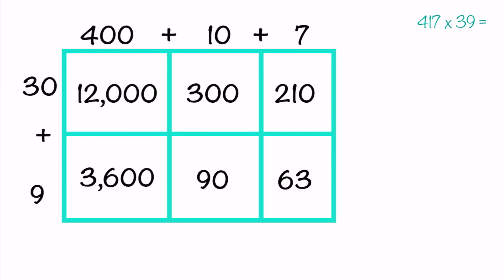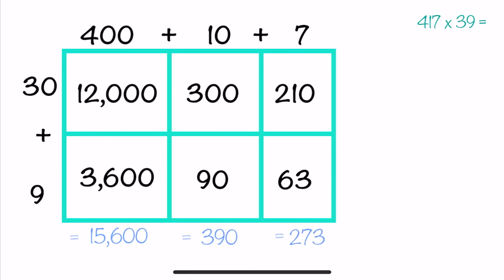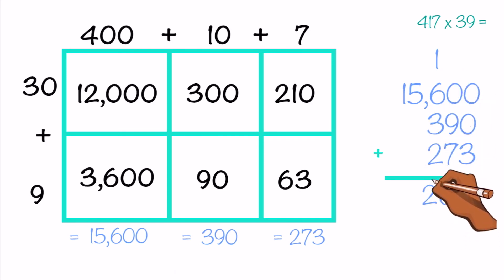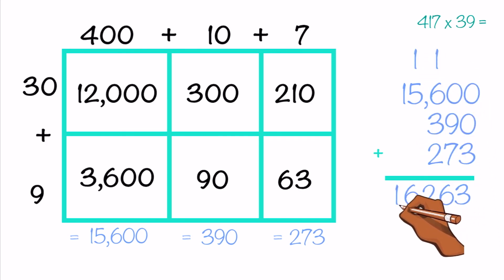This time we have 6 partial products instead of 4, so let's use some mental math to chunk these together. 12,000 plus 3,600 gives us 15,600. 300 plus 90 is 390. And 210 plus 63 is 273. Now we can take those three numbers and add them together: 15,600 plus 390 plus 273. When we add those all together, we get 16,263.